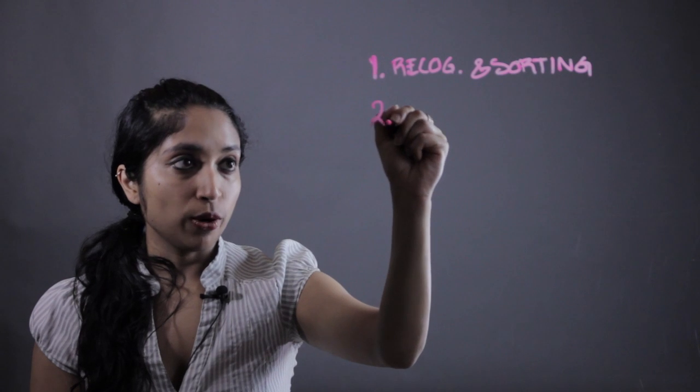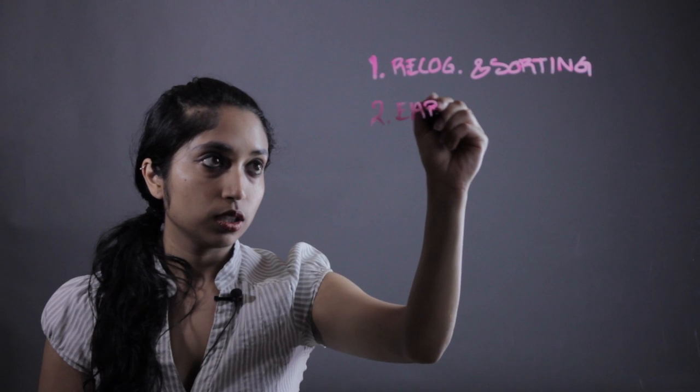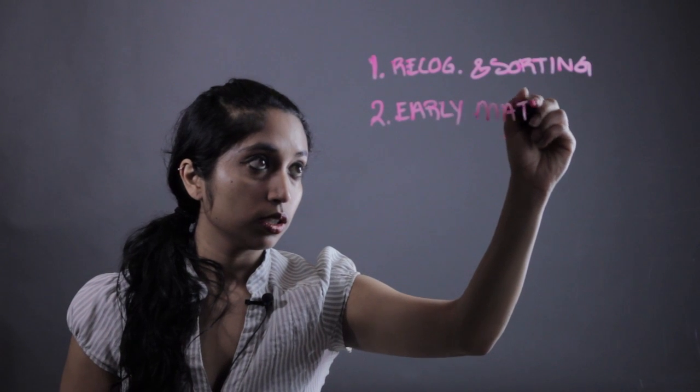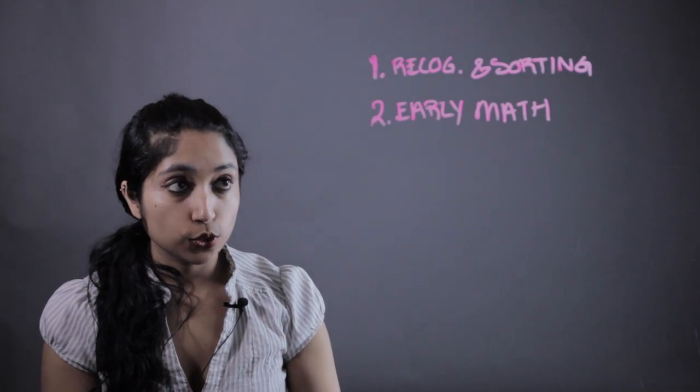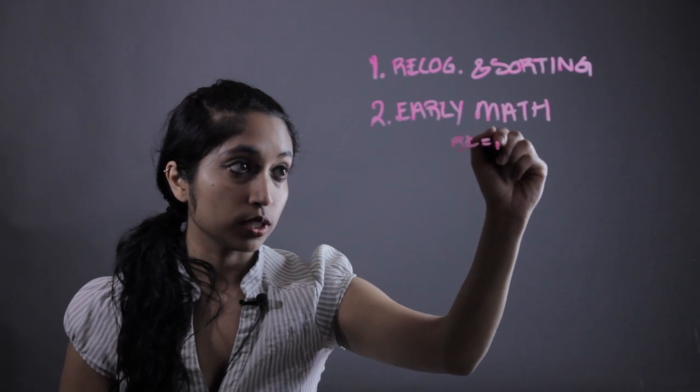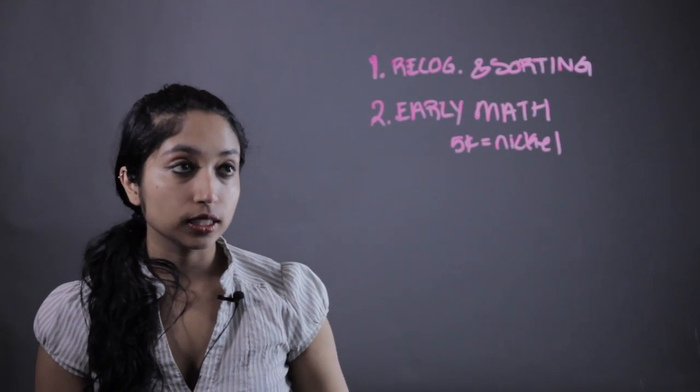The second thing you want to do with them is practice that early math they've been learning in school and apply this to the money. For instance, counting out individual pennies, like counting out five cents, which they're going to learn equals a nickel, and helping them make that connection through practicing early math.